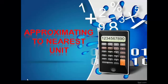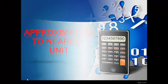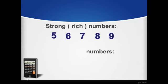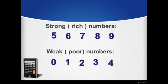Hi everyone, our new lesson is approximating to nearest unit. First, let's remember the strong or rich numbers, which are 5, 6, 7, 8, and 9 — those numbers give one. While poor or weak numbers are 0, 1, 2, 3, and 4, and those numbers give nothing.